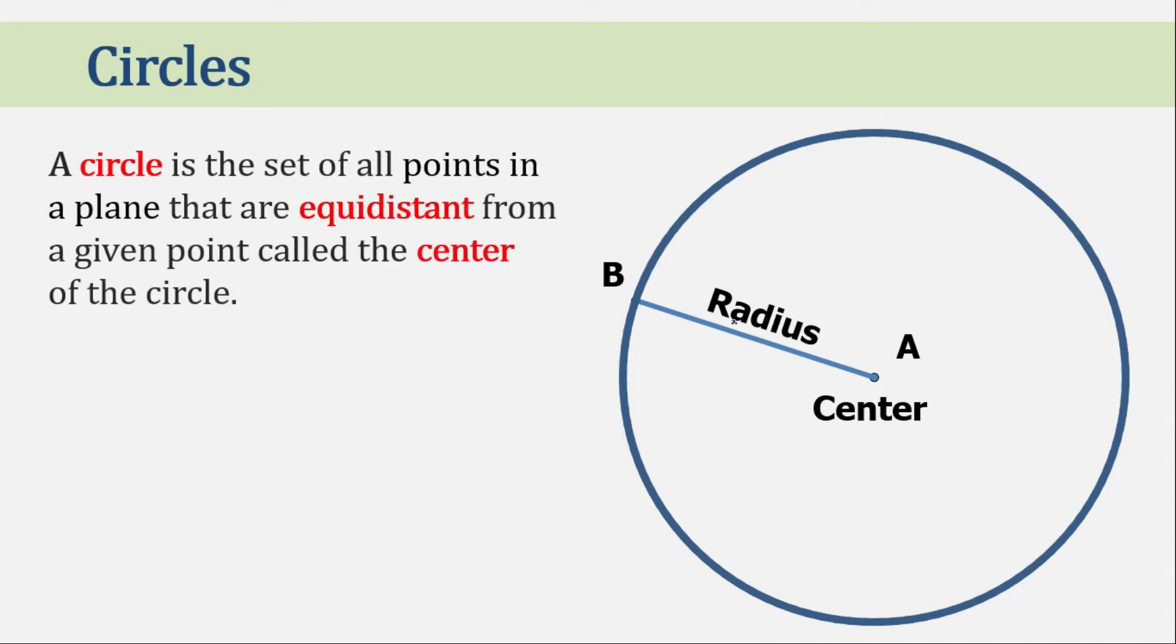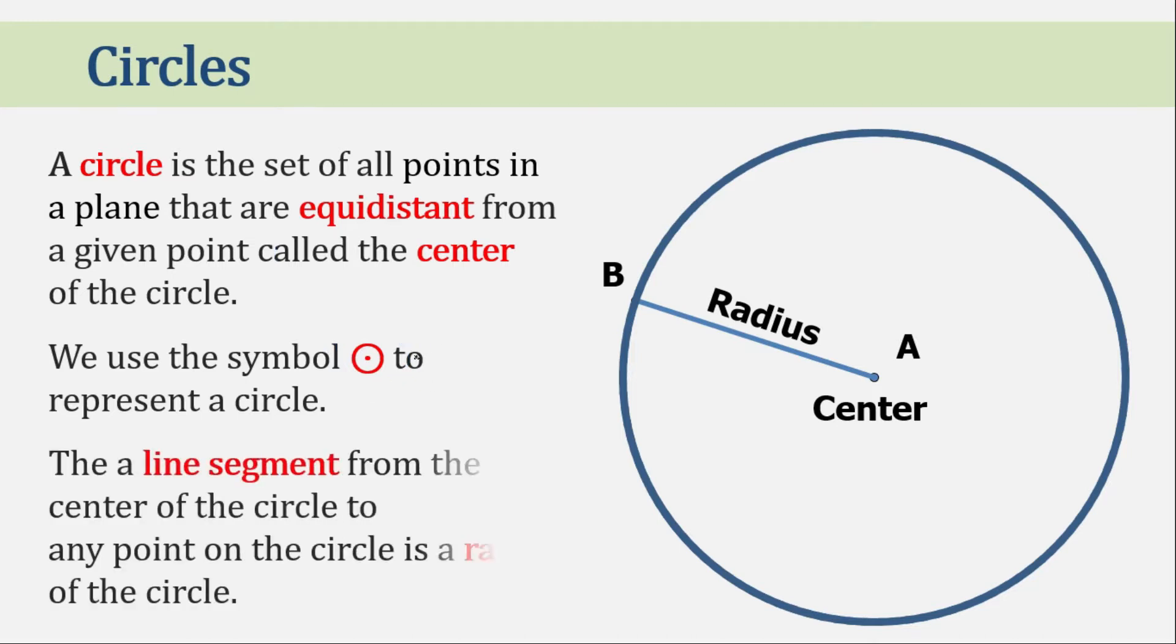Now with this illustration, we can define a circle as a set of all points in a plane that are equidistant from a given point called center of the circle. We can use this symbol to represent a circle. The line segment from the center of the circle to any point on the circle is called radius of the circle.